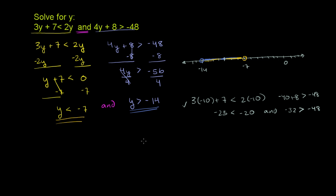Now let's just verify things that shouldn't work. So 0 should not work — it's not in the solution set. We've got 3 times 0 plus 7, that would be 7, and 7 is not less than 0, so it would violate this condition. If you put a negative 15 in, it should violate this other condition because it wasn't in that solution set. Anyway, hopefully you found that useful.